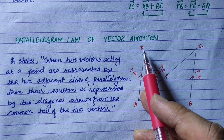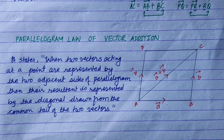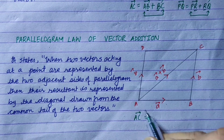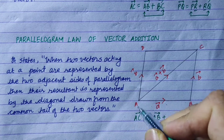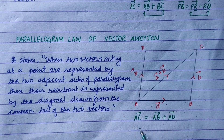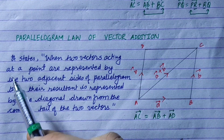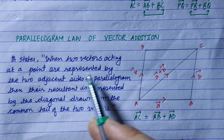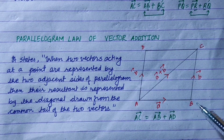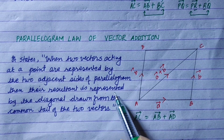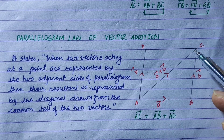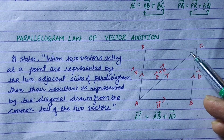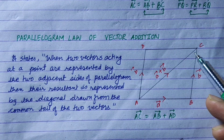The parallelogram law of vector addition is a modification of the triangle law of vector addition. The parallelogram law states: when two vectors acting at a point are represented by two adjacent sides of a parallelogram, then their resultant is represented by the diagonal drawn from the common tail — the initial point. The resultant is the diagonal AC, which equals AB vector plus AD vector.